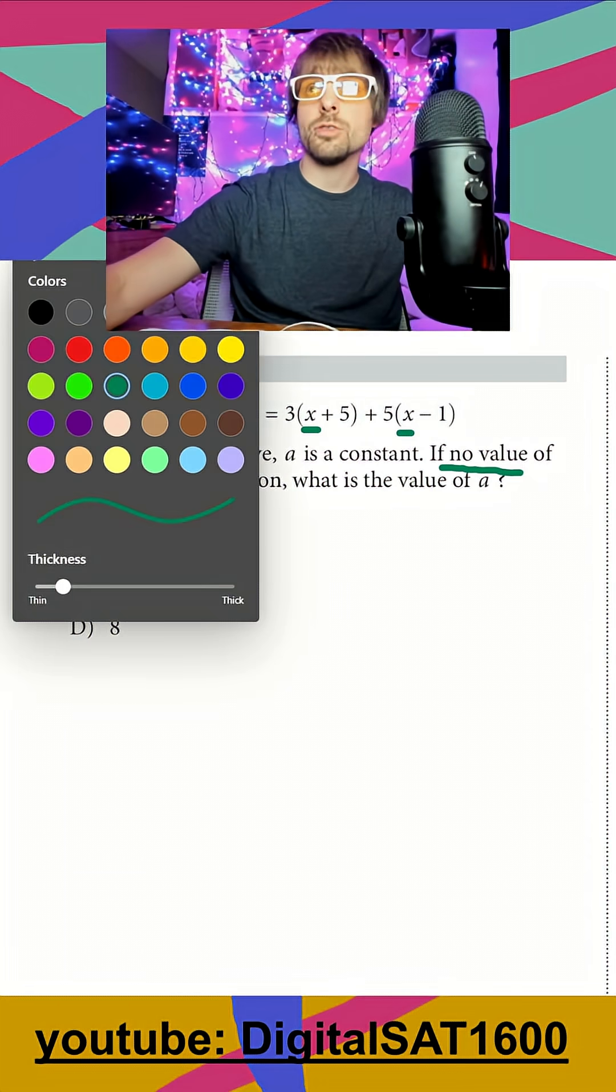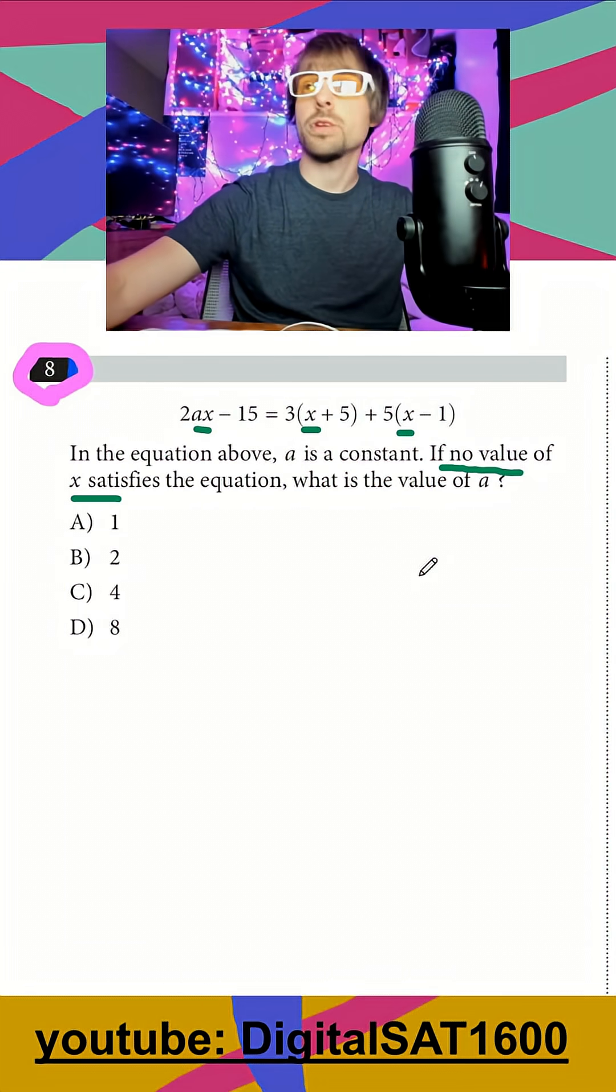So anytime I get a no solution linear problem, I just put everything in slope intercept form and set my slopes equal. We kind of treat this like equation one and I treat this like equation two.